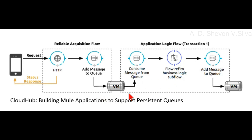VM queues hold the messages committed by the reliable acquisition flow until they are ready for processing by the application logic flow.